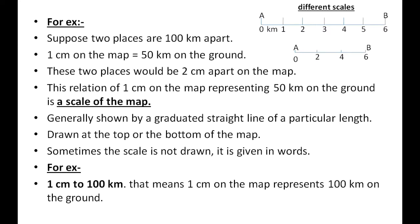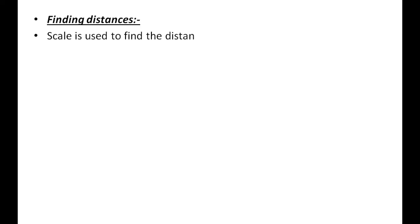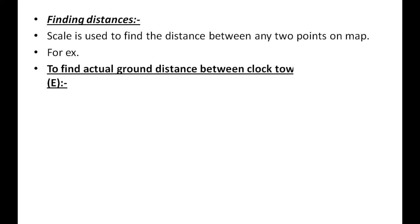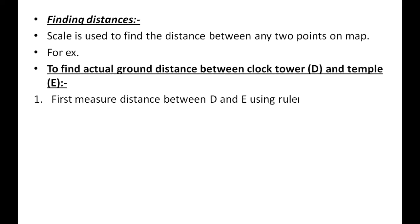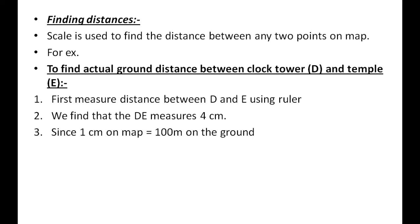For example, if 1 centimeter to 100 kilometers is written on the map, that means 1 centimeter on the map represents 100 kilometers on the ground. Since 1 centimeter on the map equals 100 meters on the ground, then the actual distance between D and E is equal to 4 times 100, which equals 400 meters.